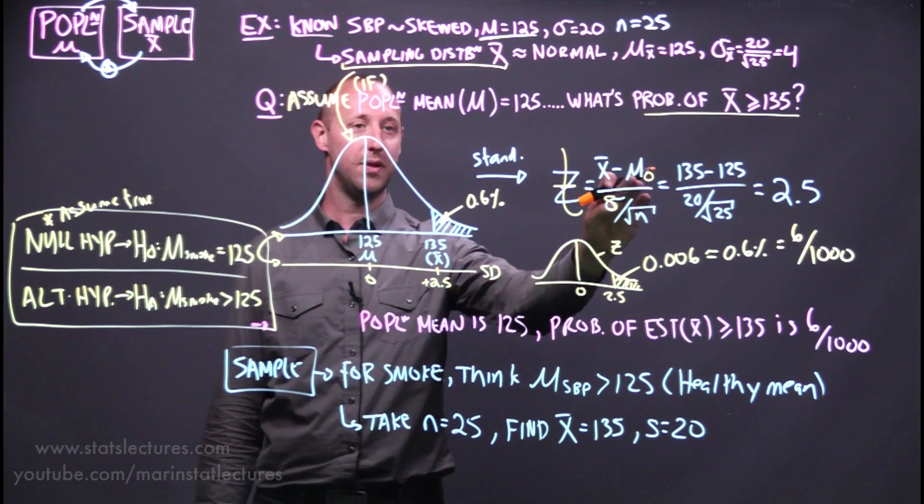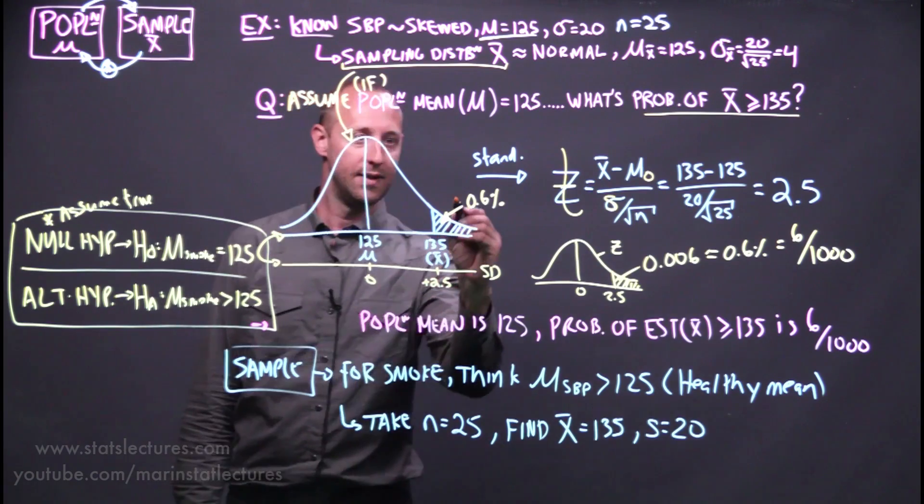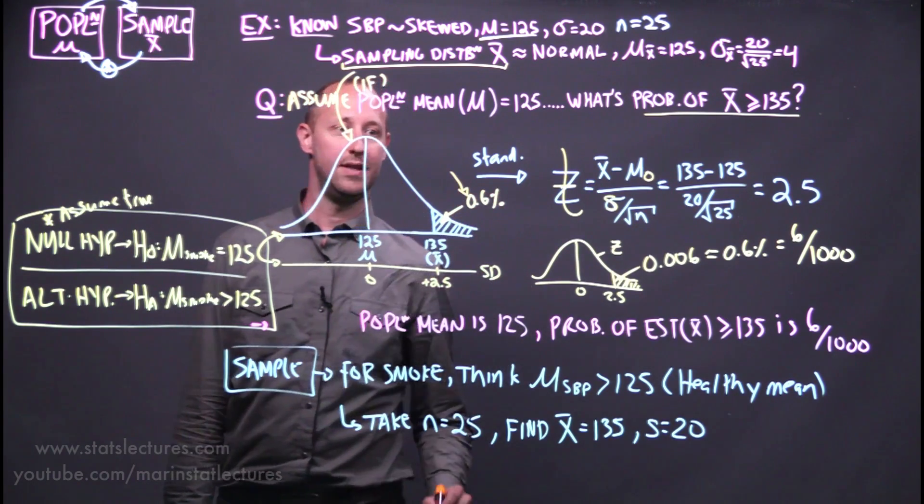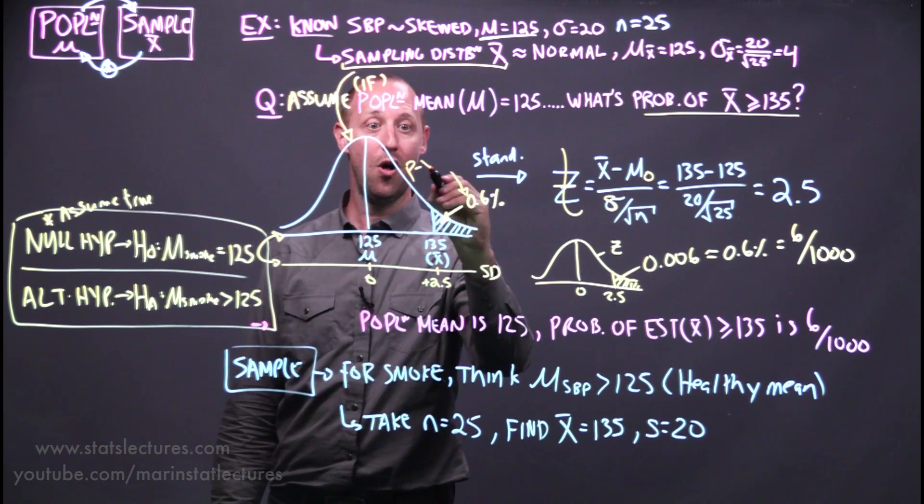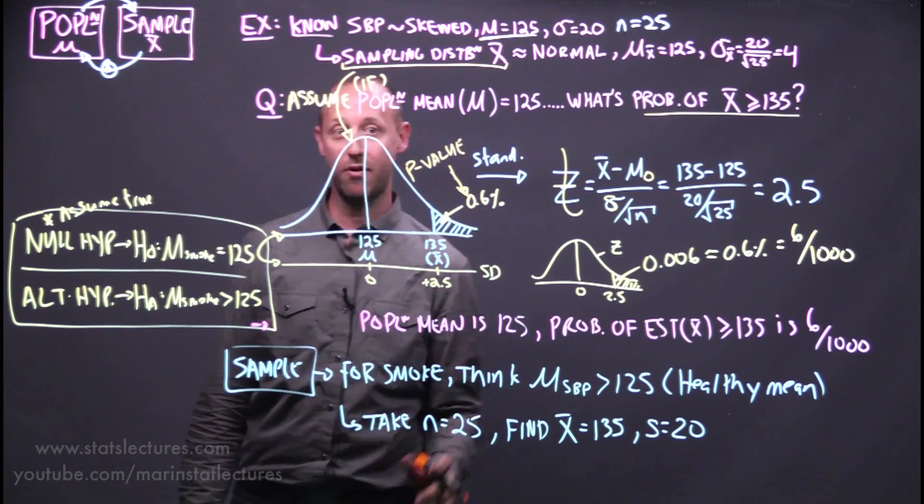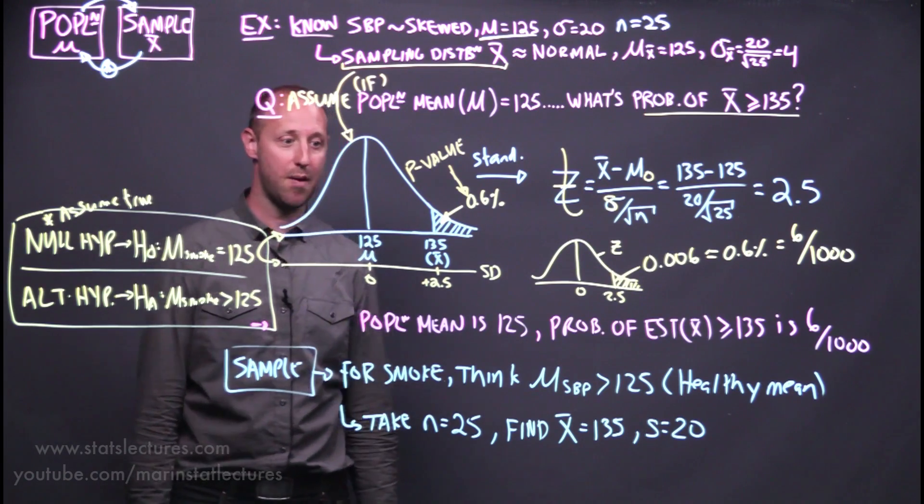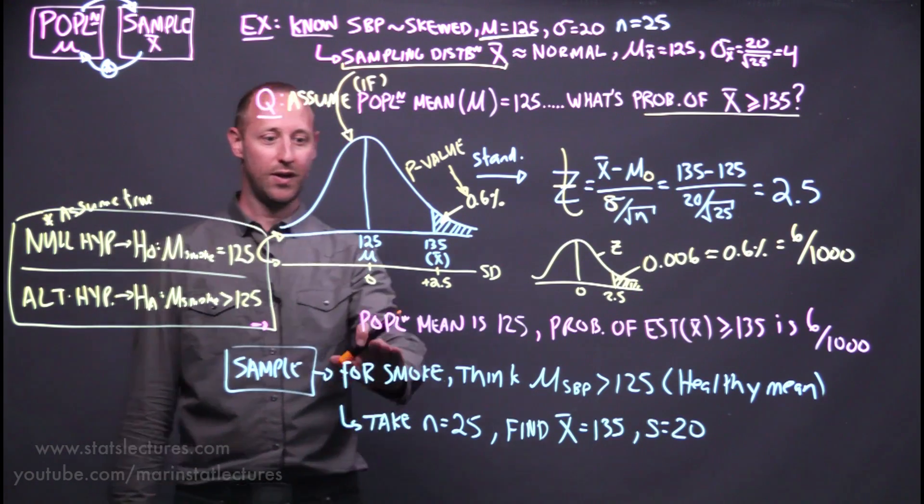We're going to label this mu naught. Rather than knowing the population mean, it's the hypothesized value for it. This thing here, the 6%, we're going to call it the p-value. But it's a probability we've already learned how to work out and we'll just start to give it that name in the context of hypothesis testing.